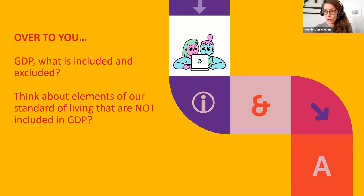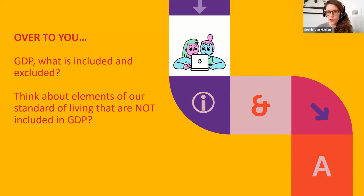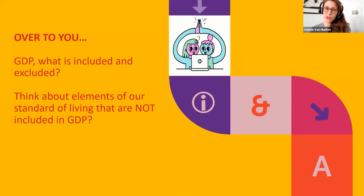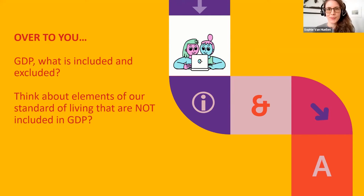Now here's an exercise — I'll ask you to use your chat function. Thinking about GDP as a measure of the productive output of an economy, what do you think are the elements that might affect your standard of living or well-being that are not included in GDP? Use the chat function — either the one only I can see, or if you want to share with everyone, use the one where everyone can see. Soyun, Tanya — I cannot see the chat function at the moment, so maybe if you enable your microphones, you can feed me the responses. I'll give you about a minute.